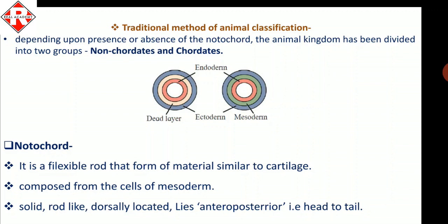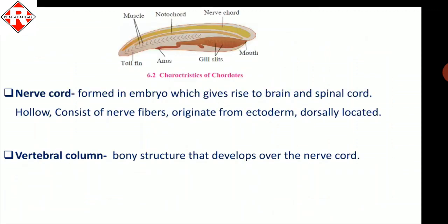The notochord is solid, rod-like, and dorsally located — meaning it is present at the back side of the organism, extending from head to tail. The nerve cord is formed in the embryo and gives rise to the brain and spinal cord, functioning as the central nervous system. It is hollow, consists of nerve fibers, originates from the ectoderm, and is also dorsally located.